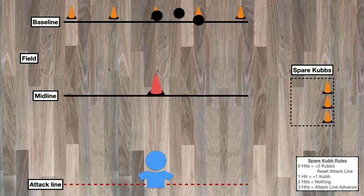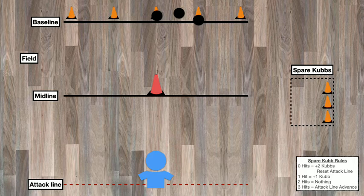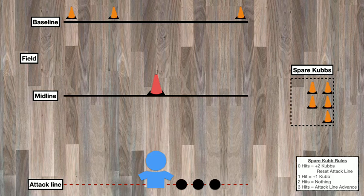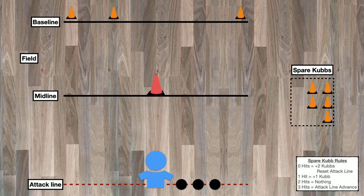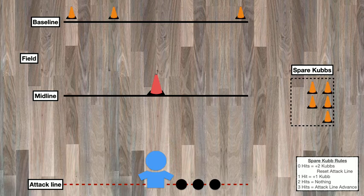Now that the first turn is over, we're going to move the Kubbs that were knocked down off to the side, and then collect the three balls. Once everything has been reset, we need to now take a look at the spare Kubbs rules off to the side. You'll notice several situations that we'll cover in a bit, but because on this turn the player was successful with two hits, nothing special is going to happen before our next round.